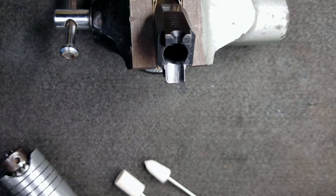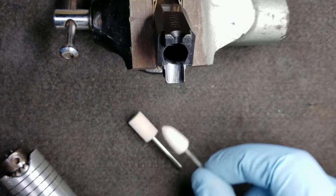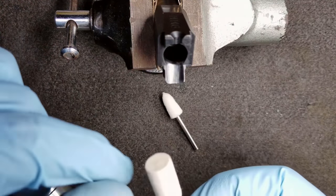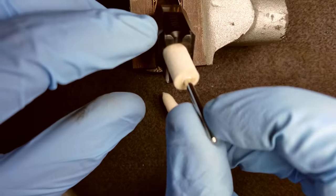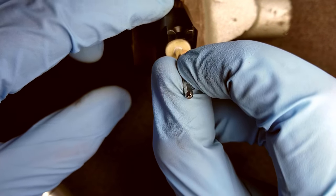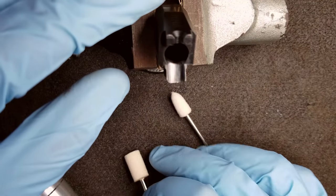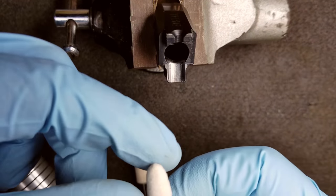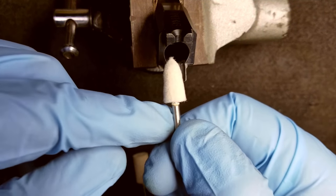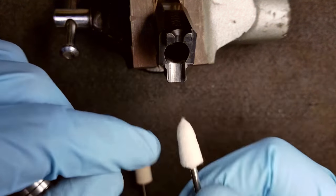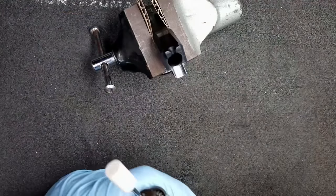In order to polish up our feed ramp and chamber, we're going to be using two different sized felt bobs. We're going to get one that's roughly the diameter of our casings so it can fit into our chamber pretty snug and we can polish all the way around and get a nice mirror polish on the inside. The next bob we're going to use is roughly the diameter of our feed ramp so we don't have to worry about going side to side. It'll pretty much be back and forth and it'll take care of the whole feed ramp at once.